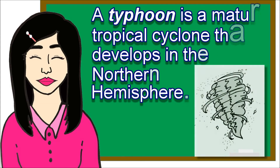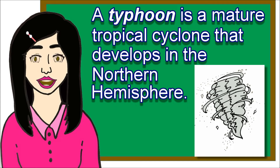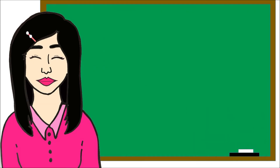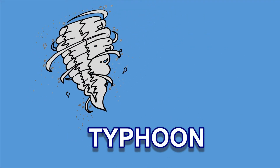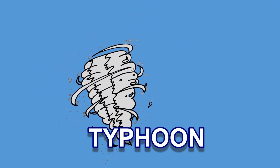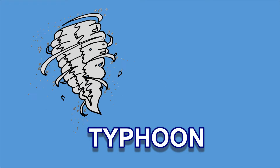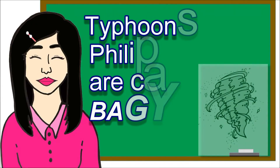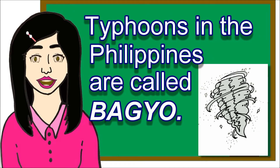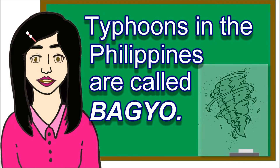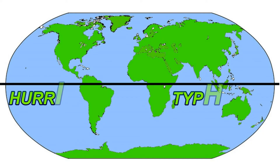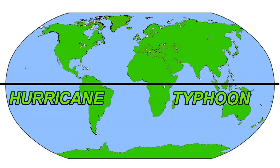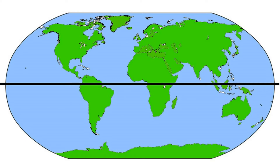A typhoon is a mature tropical cyclone that develops in the northern hemisphere. The term typhoon is used only in the northwestern part of the Pacific Ocean. Typhoons in the Philippines are called Baguio. In the northeastern part of the Pacific Ocean and in the northern part of the Atlantic Ocean, the equivalent term is hurricane.